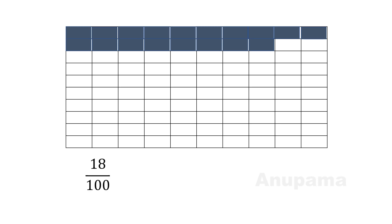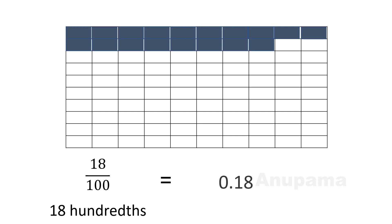Let us take one more rectangle. Here there are 100 parts — total number of parts are 100. I will shade a few parts. The number of shaded parts are 18. So what is the fraction? The fraction is 18 by 100, or we can say 18 hundredths. We can write this in the form of decimals as 0.18. We read this as 0.18. Always remember: when we read decimals, we read them as 0.18, not any other way.